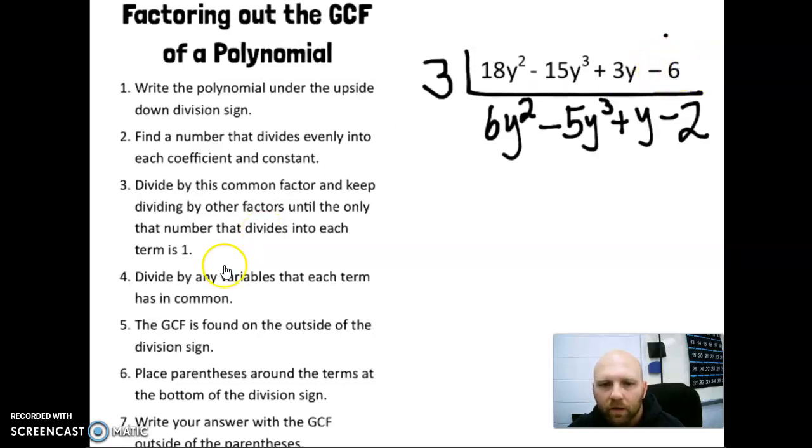So we can't divide by any more variables. The GCF is found on the outside of the division sign. So the 3 here would be our GCF. And we're going to place parentheses around the terms at the bottom of the division sign.